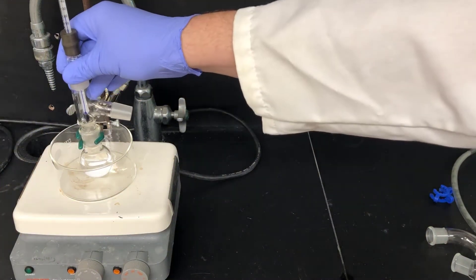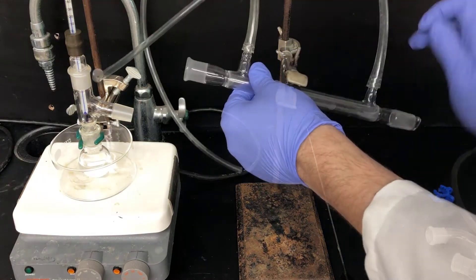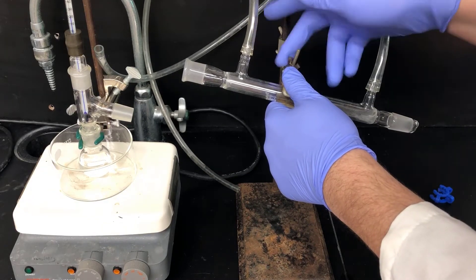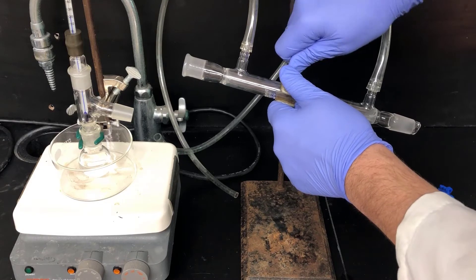Now I'm putting a three-way distillation head on the top with a thermometer. Now I'm getting another ring stand and clamp to secure the condenser, which I'll attach next. Don't try to get away with just one clamp on your distillation apparatus. It's too wobbly. Use two clamps for stability.